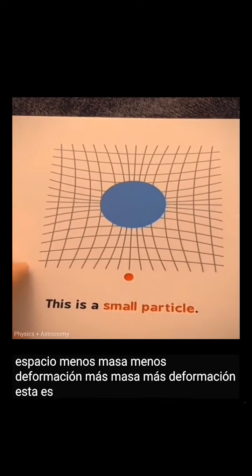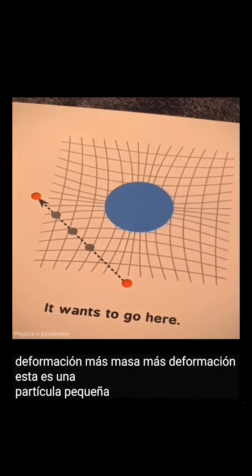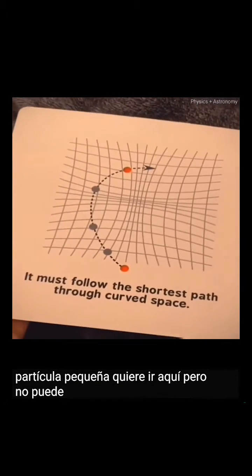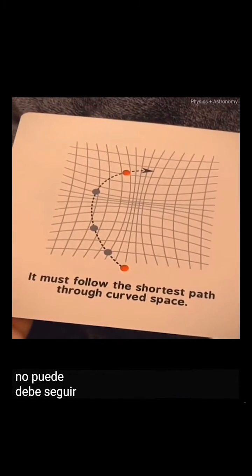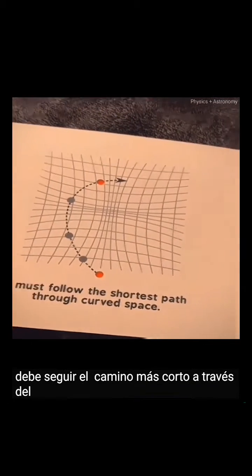This is a small particle. It wants to go here, but it can't. It must follow the shortest path through the curved space.